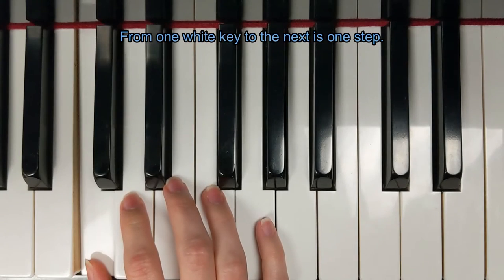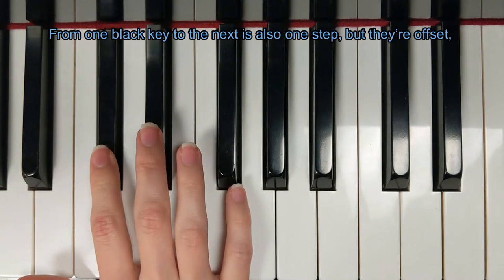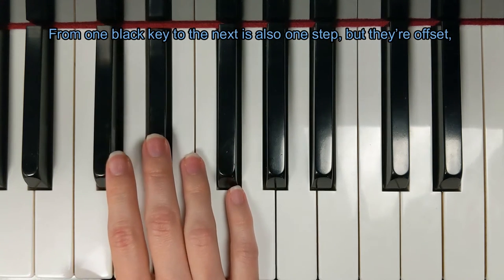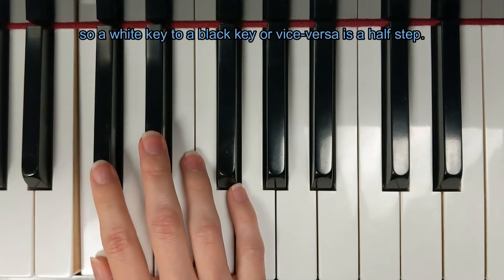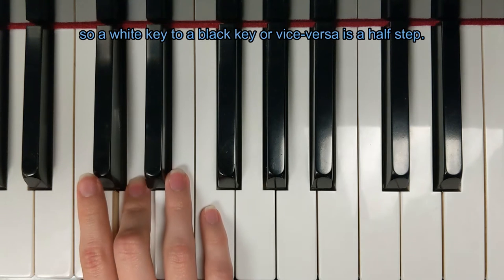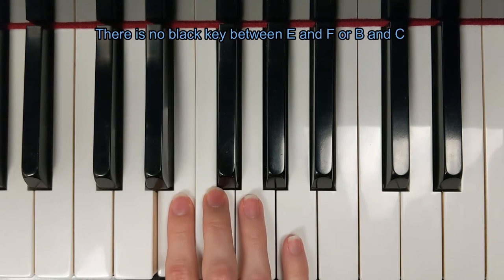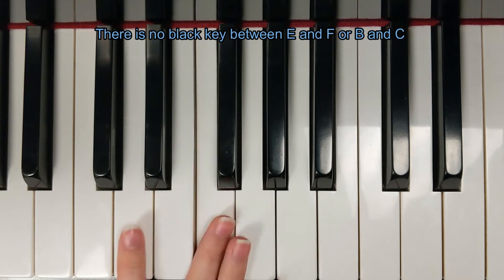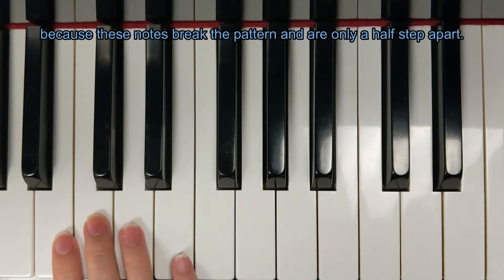From one white key to the next is one step. From one black key to the next is also one step, but they're offset. So, a white key to a black key, or vice versa, is a half step, usually. There is no black key between E and F, or B and C, because these notes break the pattern and are only a half step apart.